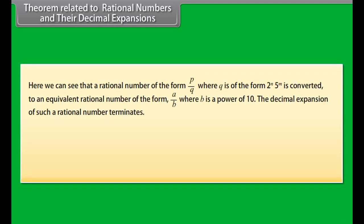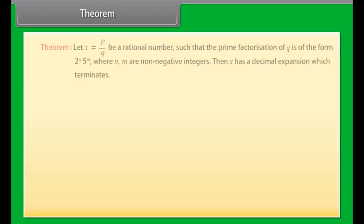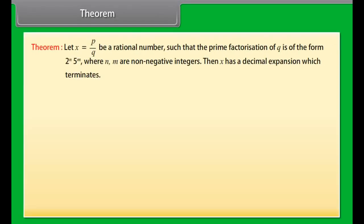Theorem related to rational numbers and their decimal expansions: Let X be a rational number whose decimal expansion terminates. Then X can be expressed in the form P upon Q, where P and Q are co-prime, and the prime factorization of Q is of the form 2 raised to the power N × 5 raised to the power M, where N and M are non-negative integers. For example, 0.1837 can also be written in this form. The rational number P upon Q can be converted into decimal representation using the long division method.